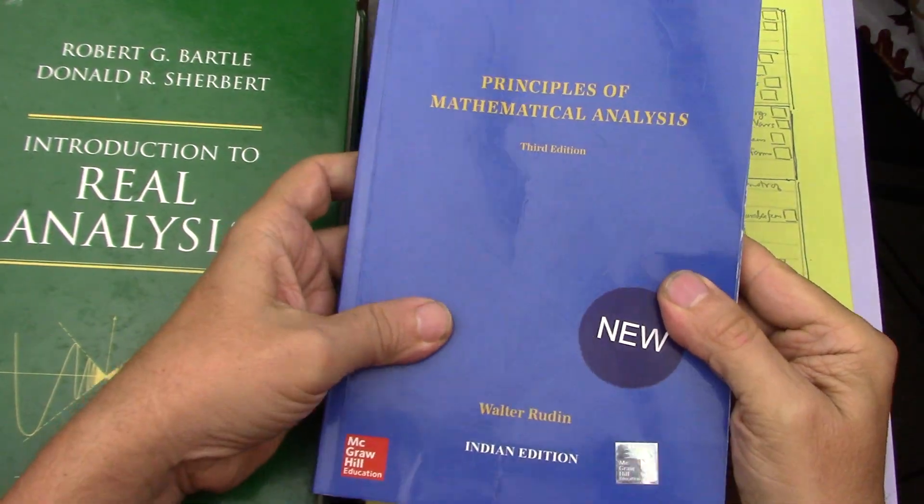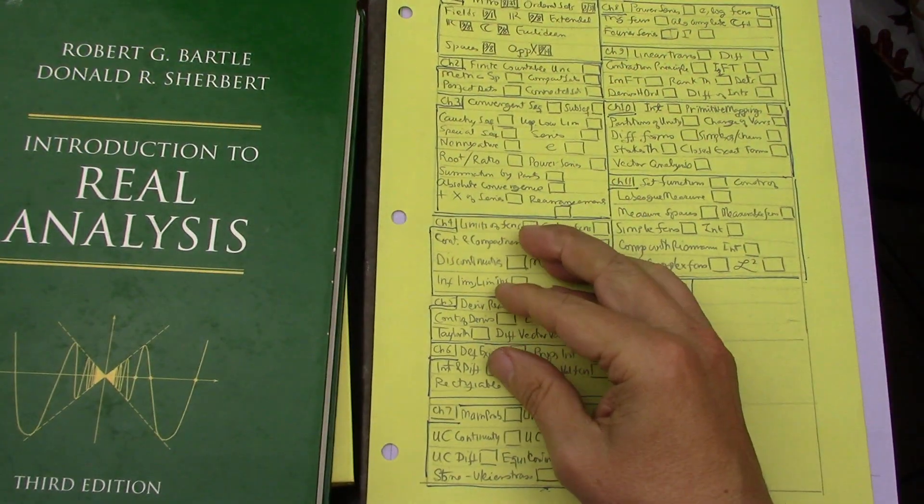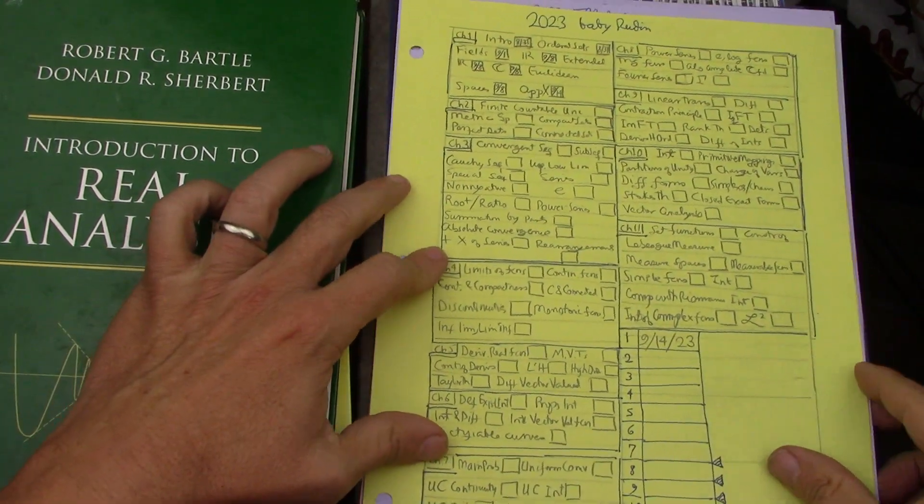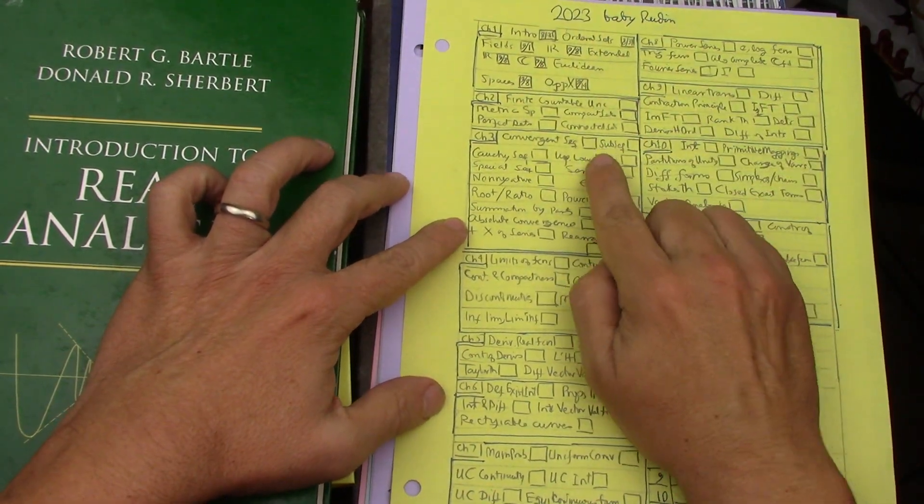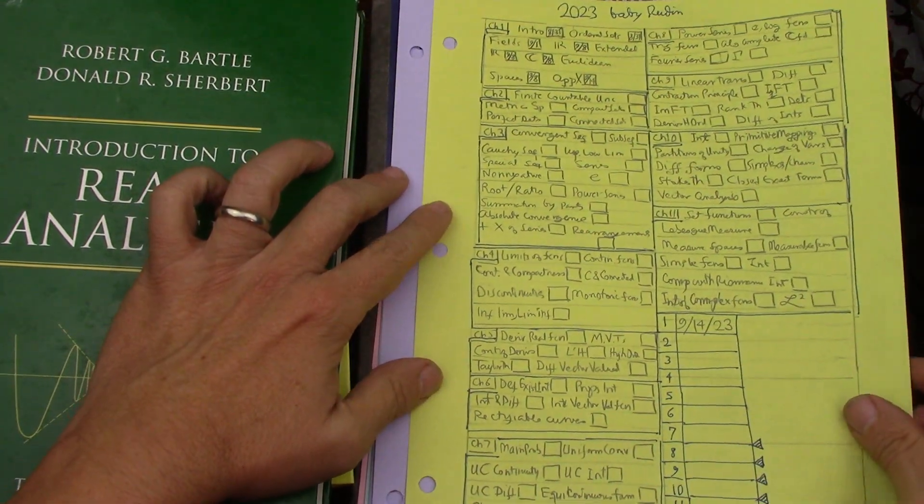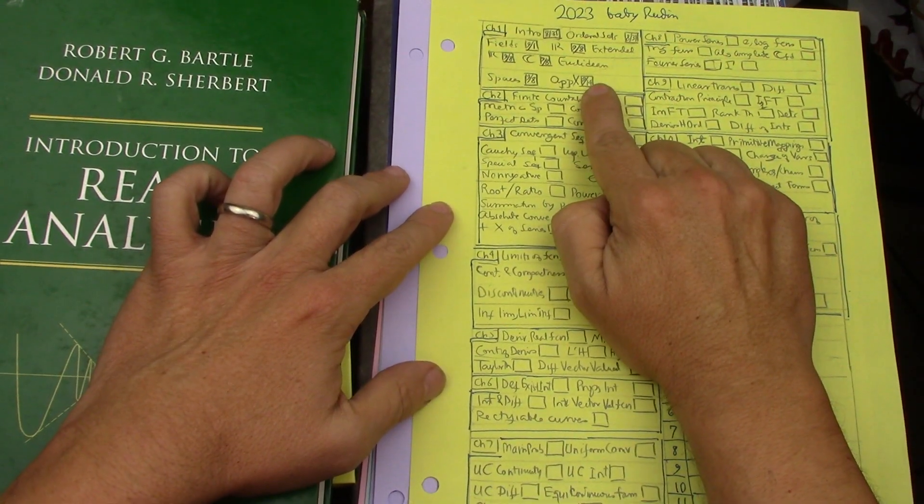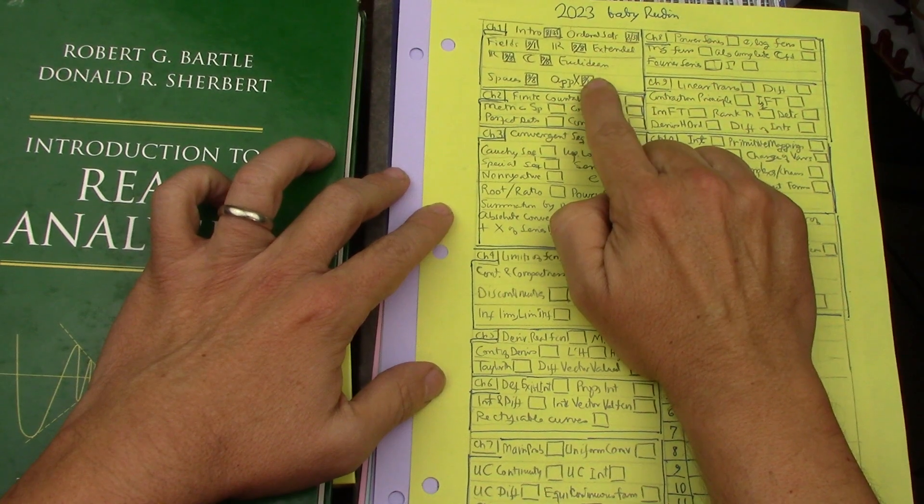That's baby Rudin, you guys have seen it before if you watch any videos in my channel. As of today I've read the first chapter, which is number systems including the Dedekind construction in the appendix, which is a beast.